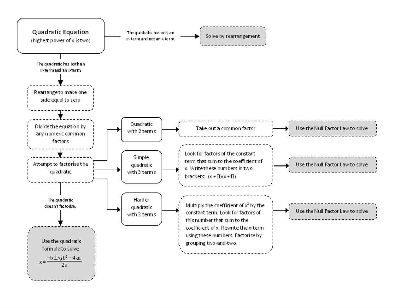If however you can't solve it by rearrangement — so if it has an x squared and an x term in it — then you won't be able to isolate x. So we need to be able to factorize. You want to make one side zero, factorize the other side, and use the null factor law to solve.